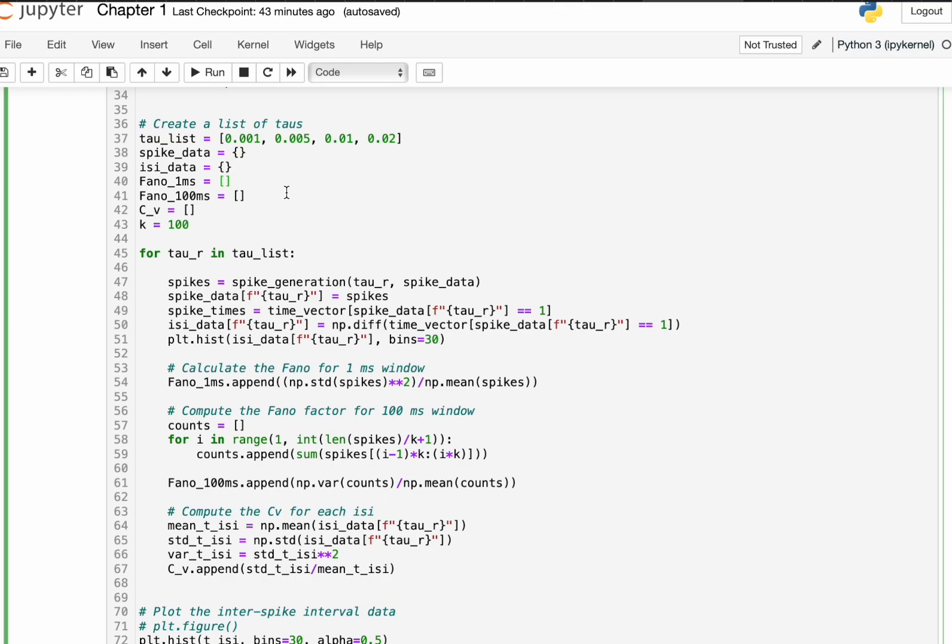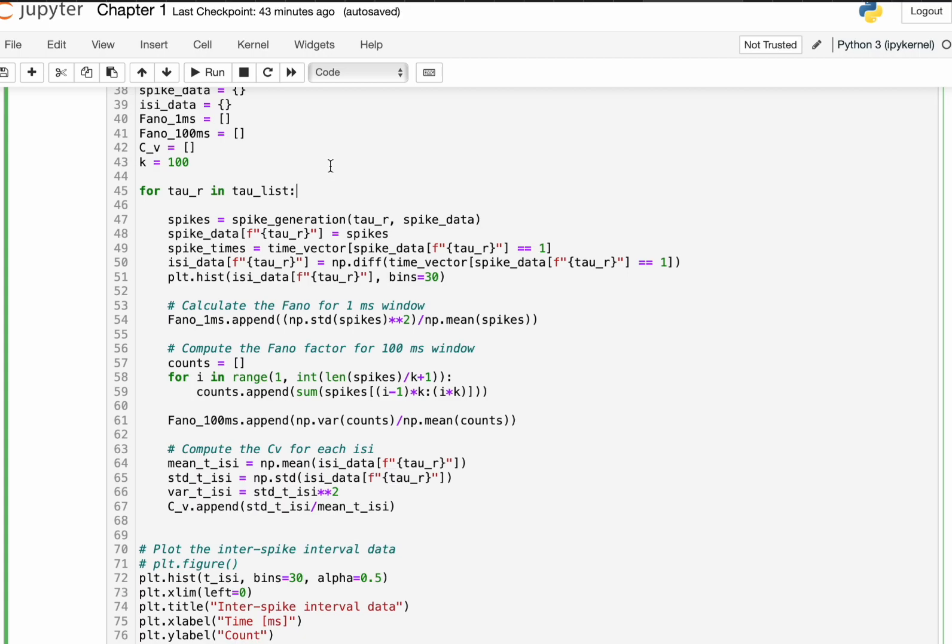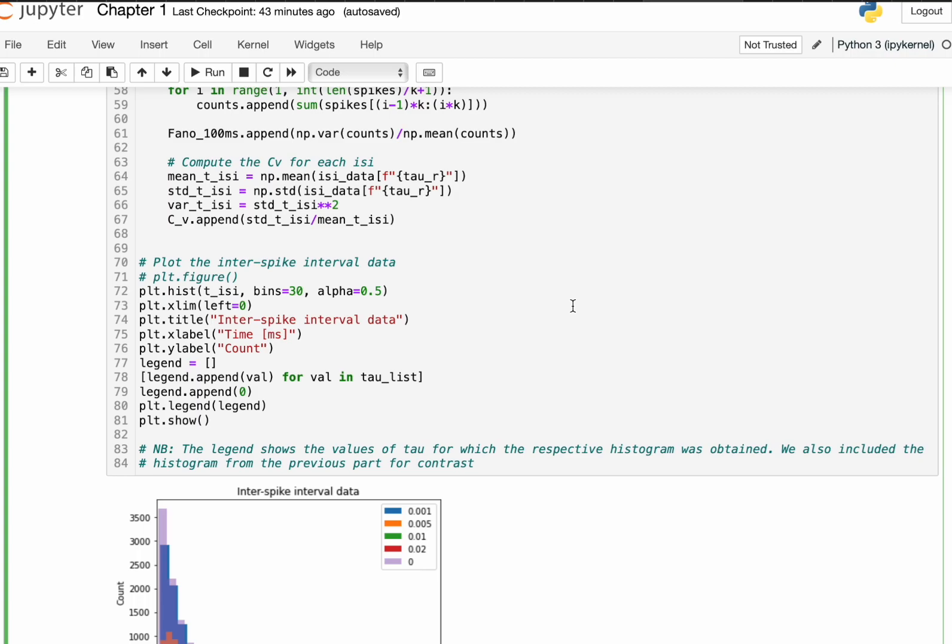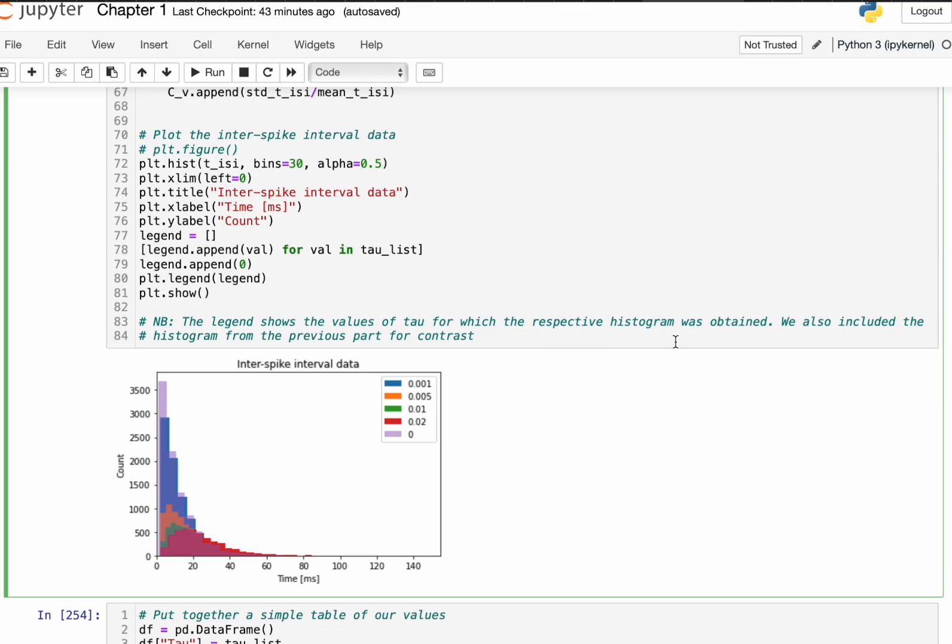And then, we also want to calculate the Fano factors again for the spike counts, depending on which sized bin we are using, and also the coefficient of variation. So, once we run the spike generator for, I believe it is 10 seconds,